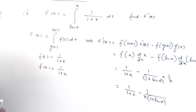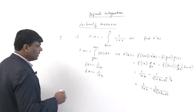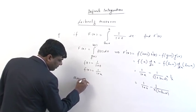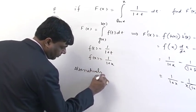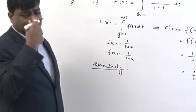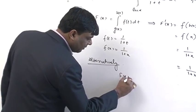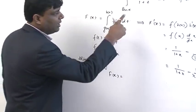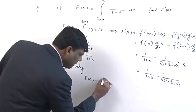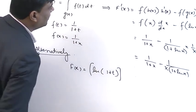This is one method. Now let's see the alternate method. The alternate method: first integrate, then differentiate. So f(x) equals the integral of dt/(1+t), which is a simple form, so it becomes ln(1+t).